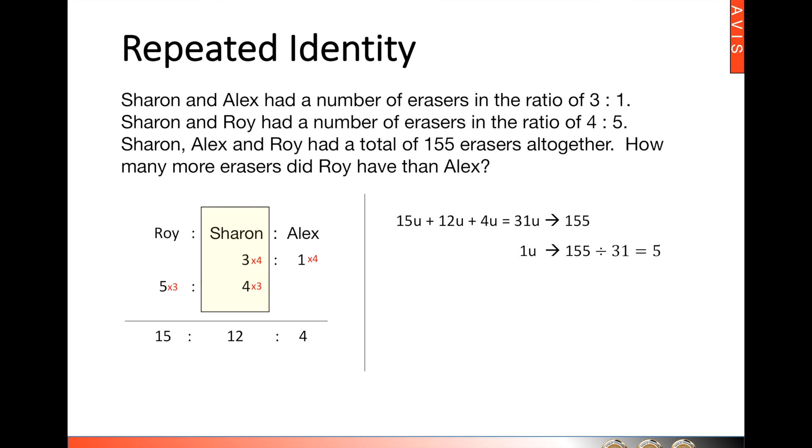Finally, we need to answer the question. We are asked how many more erasers did Roy have than Alex. So looking at the final ratio, Roy has 15, Alex has 4. That means Roy must have 11 units more than Alex, which is 55 erasers.